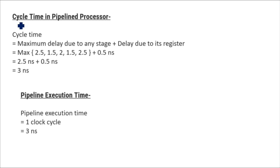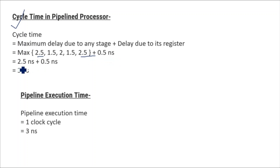Now find the cycle time in the pipeline processor. As we did in the previous question, cycle time in a pipeline processor equals the maximum stage delay plus the register delay. The maximum stage delay is 2.5 nanoseconds, and register delay is 0.5 nanoseconds, so cycle time equals 2.5 plus 0.5, which is 3 nanoseconds. Thus pipeline execution time equals one clock cycle, that is 3 nanoseconds.